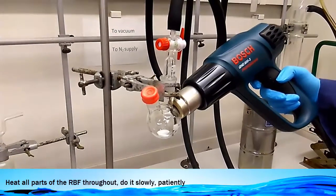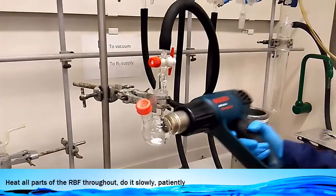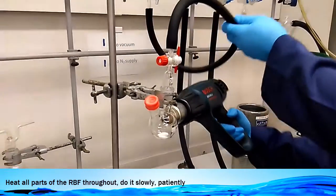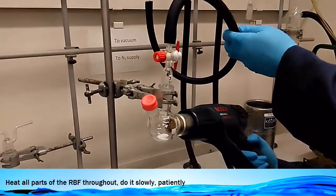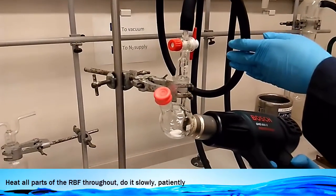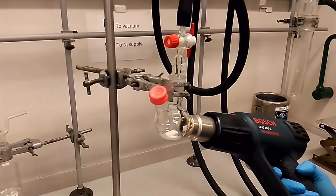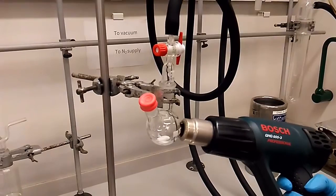Do not swiftly rotate it too fast and move it around the round bottom flask. Slowly, carefully, make sure that every single part of it has been heated with the hot air gun.